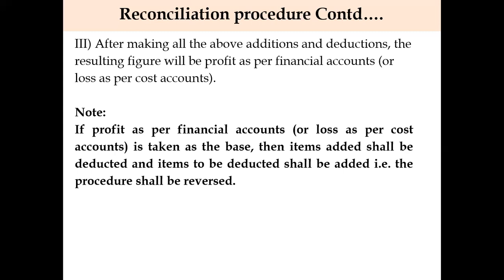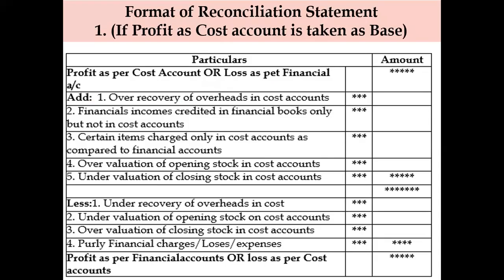Nothing is much complicated here. You have to stick to one format. If you are thorough with one format, you can easily reverse the whole thing when you take profit as per financial accounts as base. When profit as per cost account is taken as base, the items for over-recovery of overheads, financial incomes credited in financial books only, certain items charged only in cost accounts, and overvaluation of opening stock are added. Under-recovery of overheads, undervaluation of opening stock, overvaluation of closing stock, and purely financial charges and losses are deducted. Finally, we arrive at profit as per financial accounts.